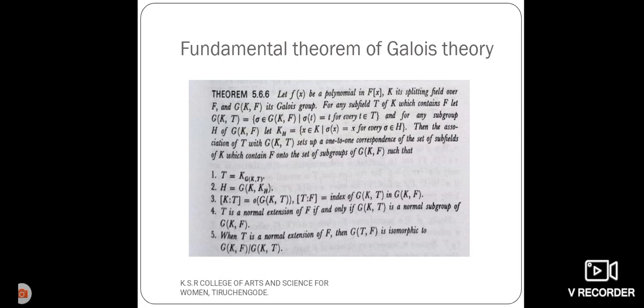K over T equals the order of G(K,T). If T is normal over the field F if and only if G(K,T) is a normal subgroup of G(K,F).